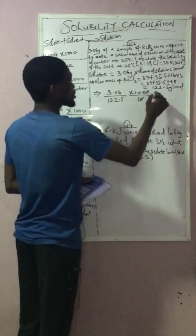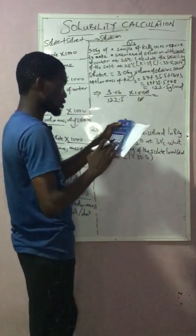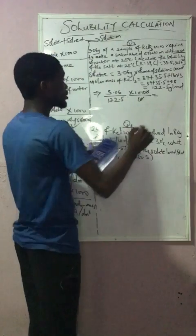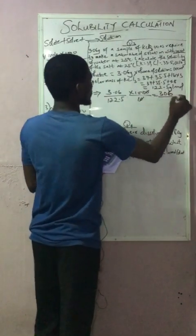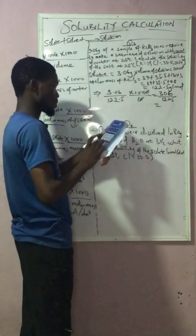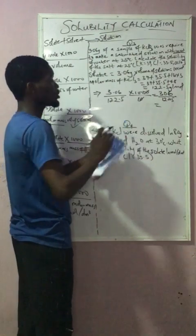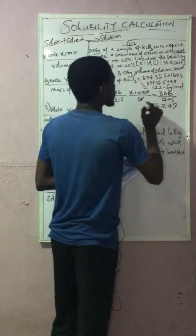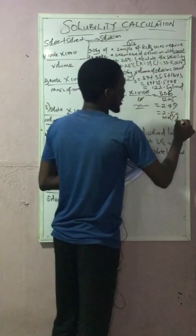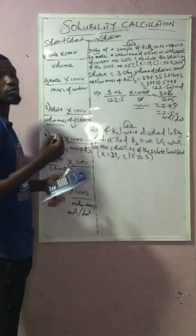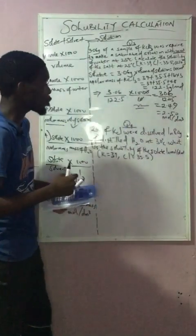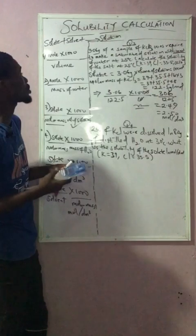Now applying the formula: solute / molar mass × 1000 / volume = 3.06 / 122.5 × 1000 / 10. Cancelling: 3.06 × 100 / 122.5 = 306 / 122.5 ≈ 2.49, which approximates to 2.50 mol per dm³. In your JAM exam, the correct answer is 2.50 mol per dm³.